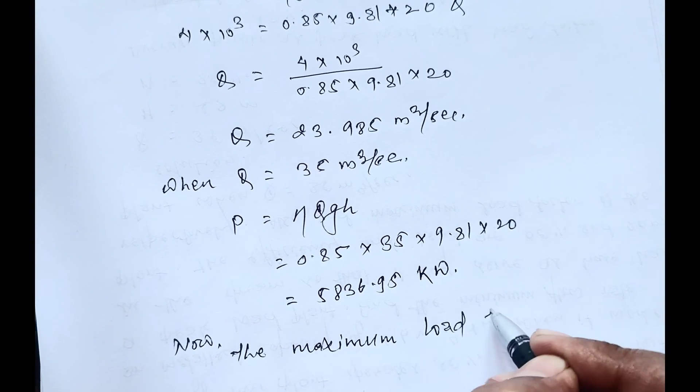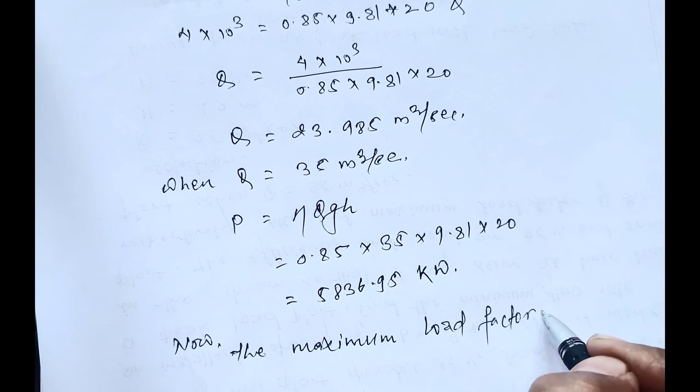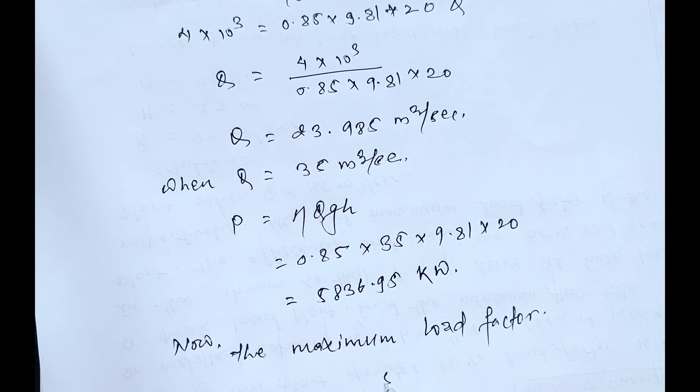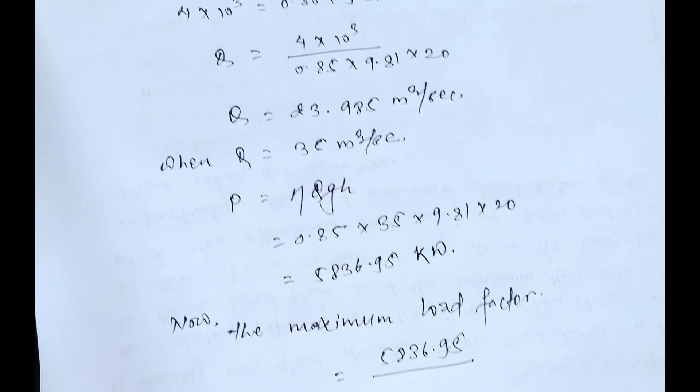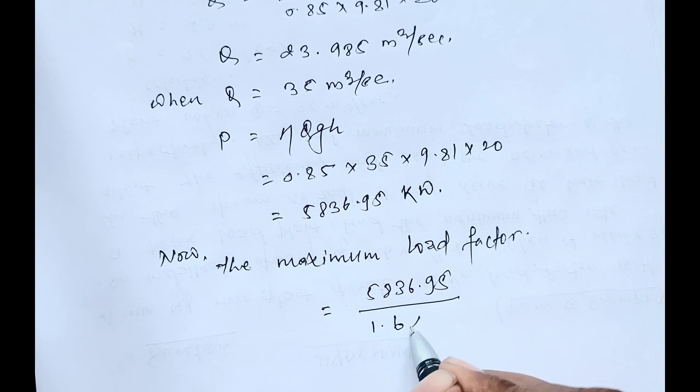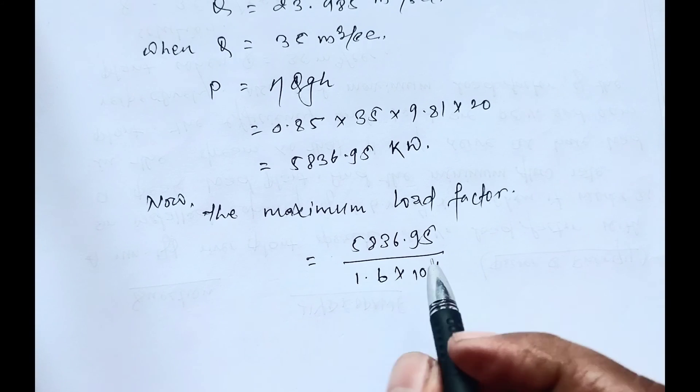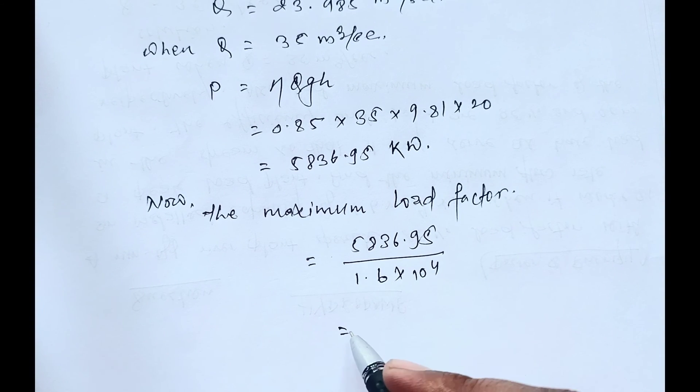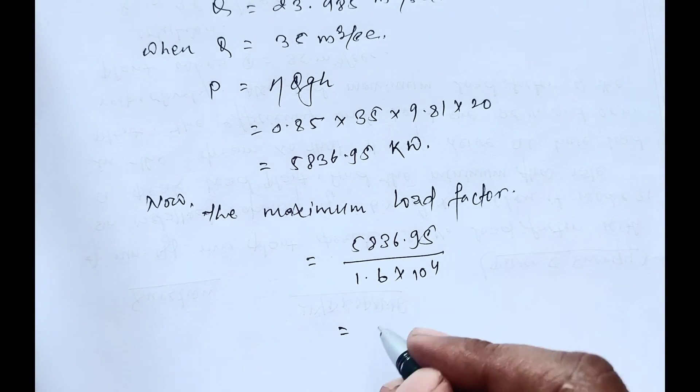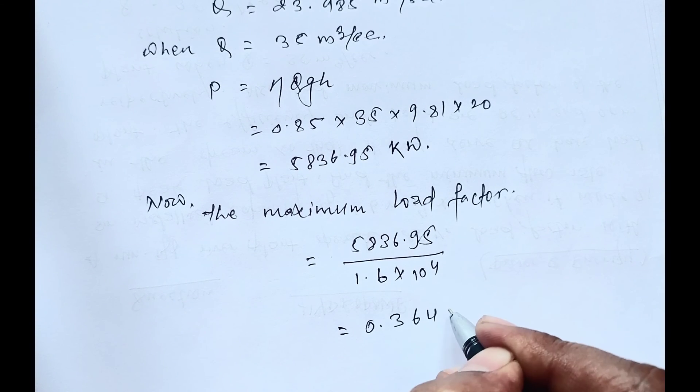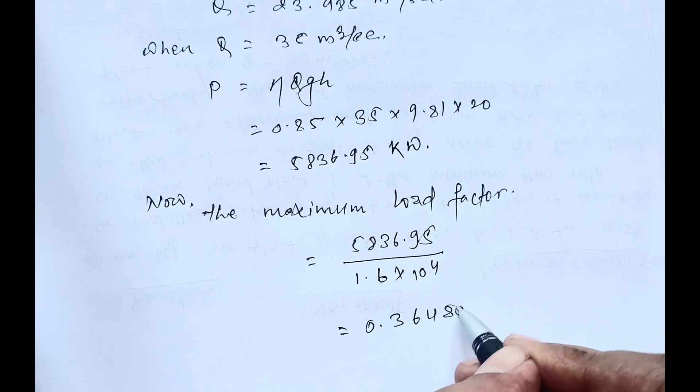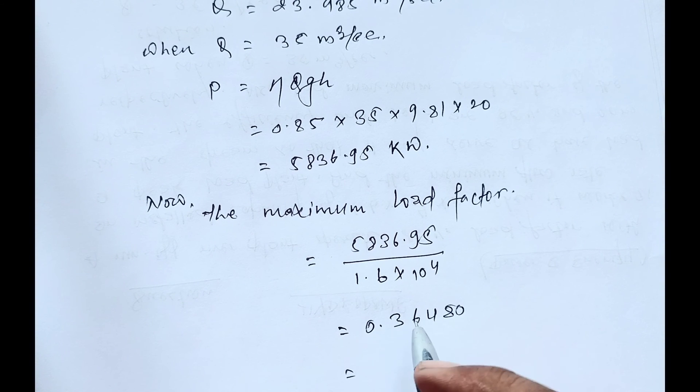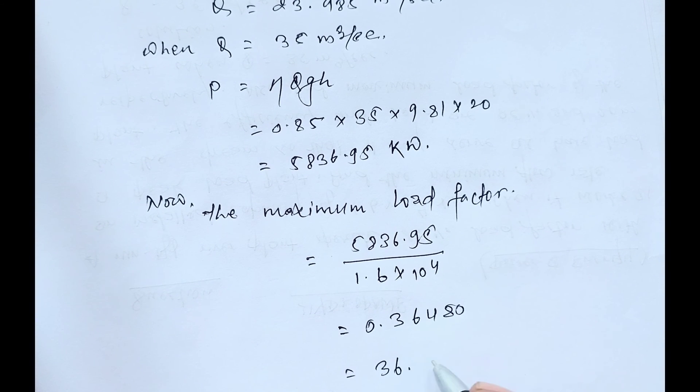Maximum load factor equals 5,836.95 divided by 1.6 × 10⁴, that is average load divided by installed load, which equals 0.3648, or 36.48 percent.